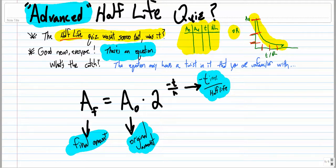So time is just how much time went by, half-life is the length of the half-life, you know, like maybe a year, maybe a minute, maybe 10,000 years, whatever.